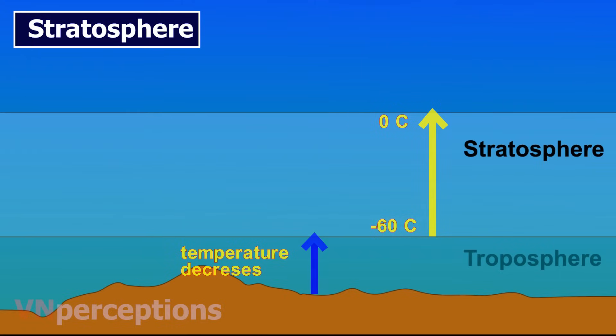The layers of air there are quite stable. Commercial jet aircraft fly in the lower stratosphere to avoid turbulence, which is very common in troposphere.